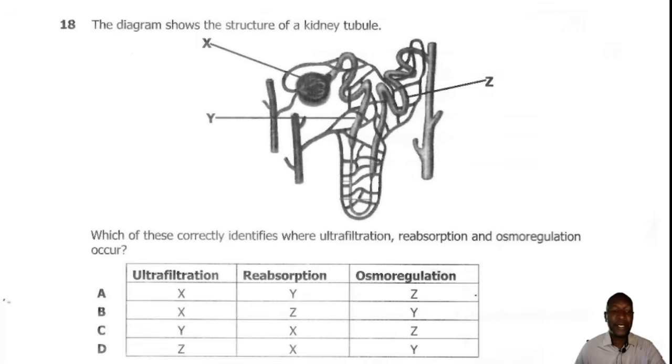Question 18. The diagram shows the structure of a kidney tubule. Which of the following correctly identifies where ultrafiltration, reabsorption and osmoregulation occurs? We have parts labeled X, Y and Z. X is the glomerulus and this is where ultrafiltration takes place. Y is the proximal convoluted tubule and this is where selective reabsorption will take place. And Z is the distal convoluted tubule and this is where osmoregulation occurs. That is where ADH will have an impact. If it's produced, it will cause reabsorption to take place. If not, then water won't be reabsorbed. So the correct answer is A.